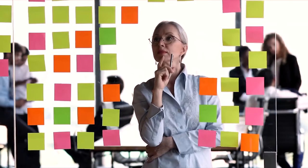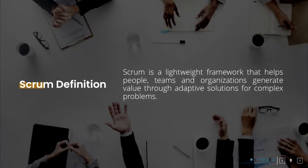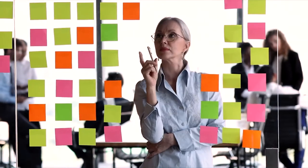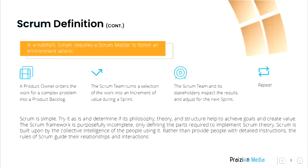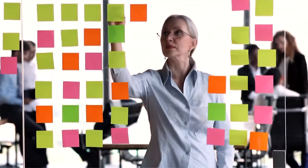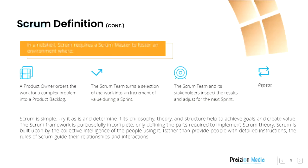Scrum definition. Scrum is a lightweight framework that helps people, teams, and organizations generate value through adaptive solutions for complex problems. In a nutshell, Scrum requires a Scrum Master to foster an environment where: one, a Product Owner orders the work for a complex problem into a Product Backlog; two, the Scrum Team turns a selection of the work into an increment of value during a Sprint; three, the Scrum Team and its stakeholders inspect the results and adjust for the next Sprint; four, repeat.